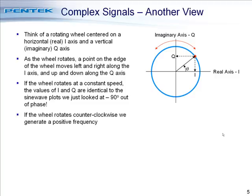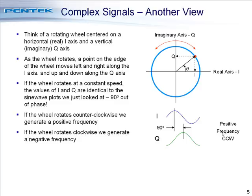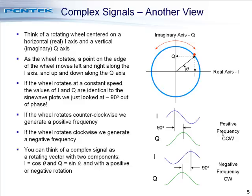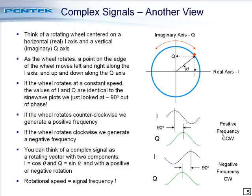If the wheel rotates counter-clockwise, we generate a positive frequency — you can see the positive frequency waveform for counter-clockwise revolution. If the wheel rotates clockwise, we generate a negative frequency. Here we see a negative frequency complex signal, where the I component lags the Q component by 90 degrees. You can think of a complex signal as a rotating vector with two components: I, which equals the cosine of the angle of the vector, and Q, which equals the sine of the angle. The rotational speed of the vector equals the signal frequency — one revolution per period of the sine wave.